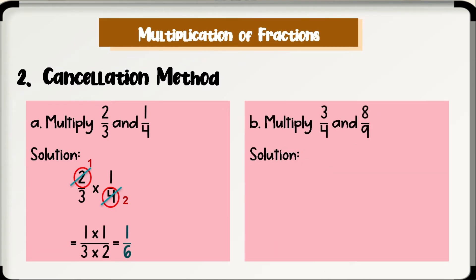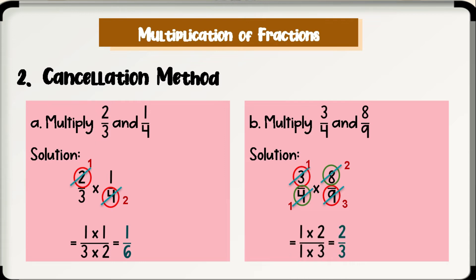Next: multiply 3 over 4 and 8 over 9. The same rule applies. First, determine which numerators and denominators have common factors — we have 3 and 9, and 4 and 8. Cancel the common factors: 3 and 9 have a common factor of 3, so 3 divided by 3 is 1 and 9 divided by 3 is 3. Also, 4 and 8 have a common factor of 4, so 8 divided by 4 is 2 and 4 divided by 4 is 1. Rewrite using the uncancelled factors and multiply: 1 times 2 over 1 times 3, which equals 2 over 3. Therefore, 3 fourths times 8 over 9 is equal to 2 over 3.